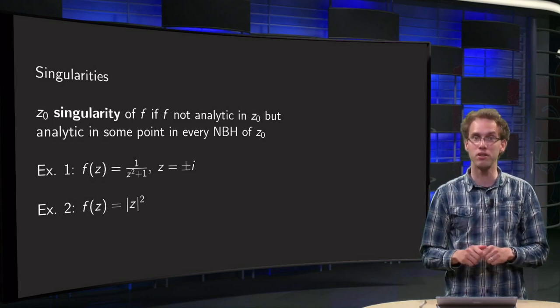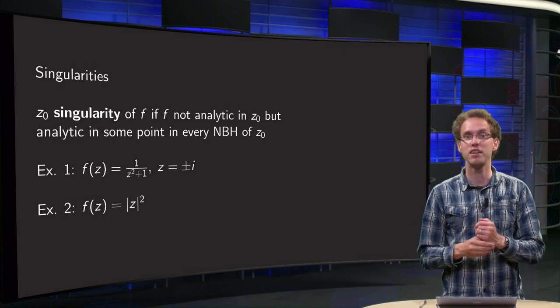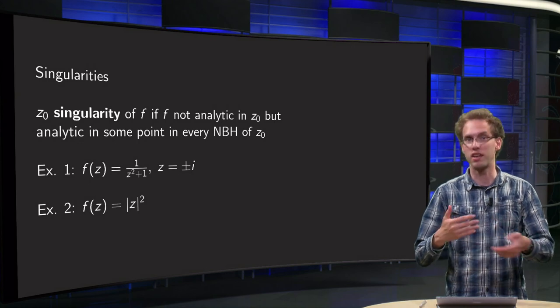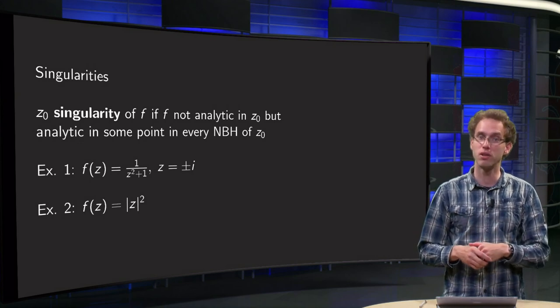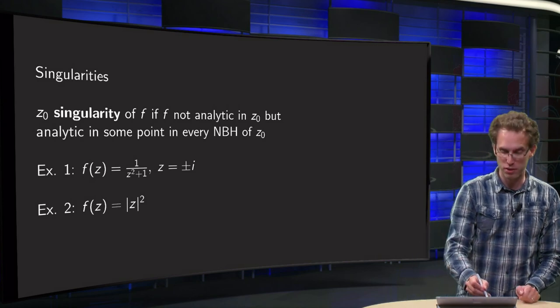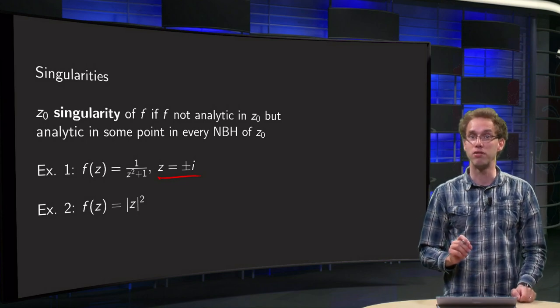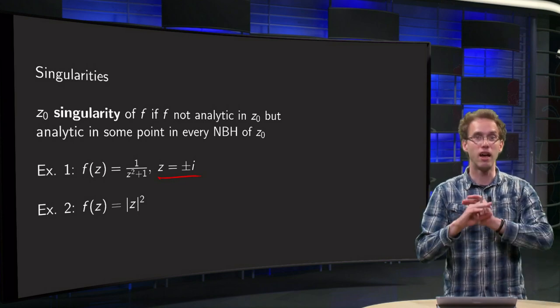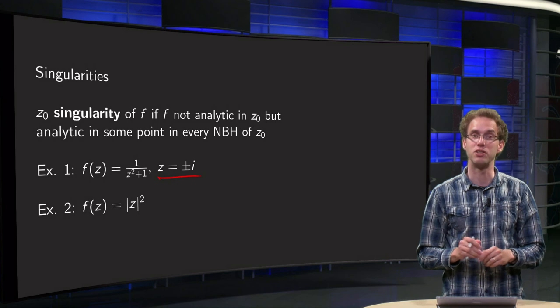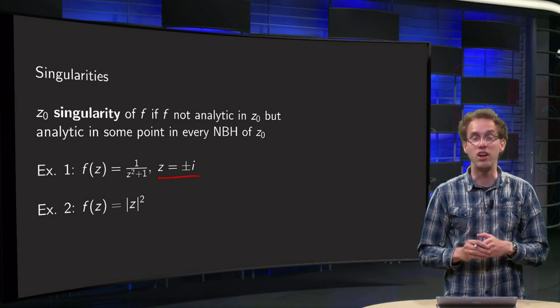So let's look at a few examples. f(z) equals 1 over z squared plus 1. It is nice and analytic because z squared plus 1 is analytic and the quotient of analytic functions is analytic, unless you are dividing by zero, which is the case for z equals plus or minus i. So you have two separate points where f is not even defined, and everywhere else f is analytic. So plus and minus i are singularities of this function.